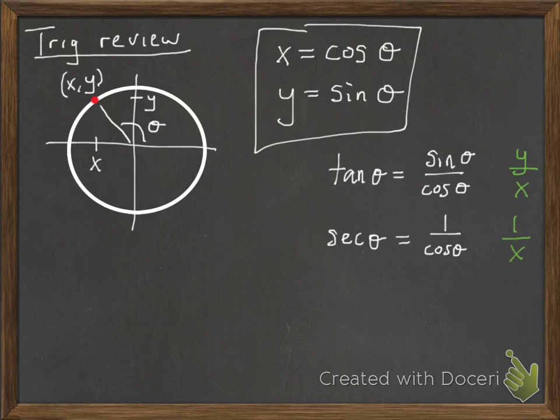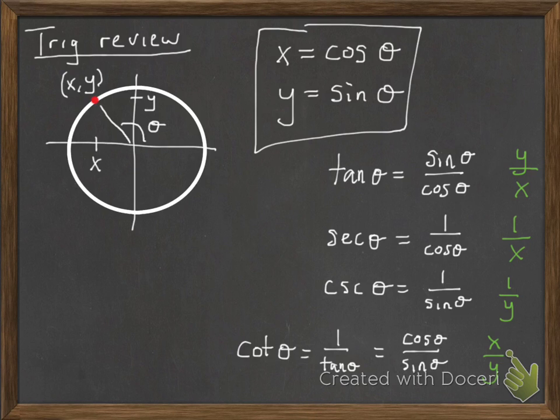There's also secant of theta, which is 1 over cosine, or 1 over x. Cosecant of theta, which is 1 over sine, or 1 over y. And then cotangent, which is 1 over tangent, or cosine over sine, or x over y.